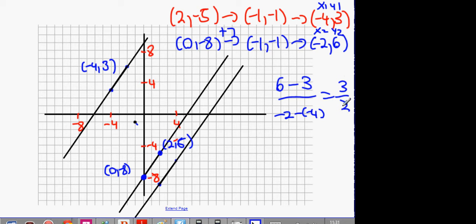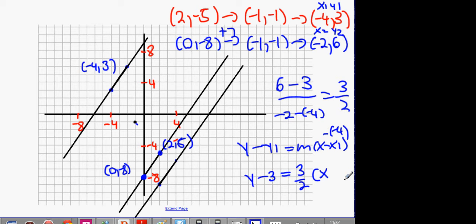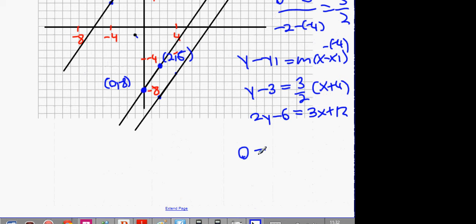Your formula: y minus y1 equals m into x minus x1. Using (4, 3) as x1, y1: y minus 3 equals 3 over 2 into x plus 4, because minus minus 4 is plus 4. Cross multiply: 2y minus 6 equals 3x plus 12. Move everything over: 0 equals 3x minus 2y, bring the 6 over, and we get 3x minus 2y plus 8 equals 0.